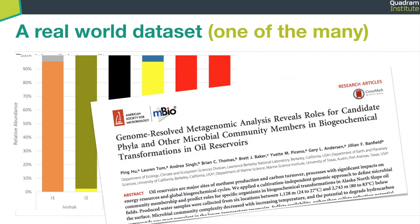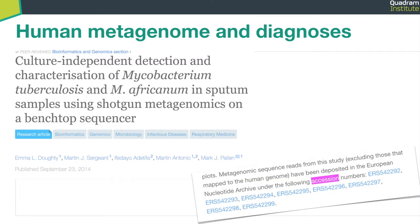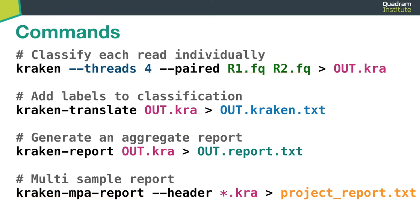All metagenomic papers come with accession numbers to public repositories, so we can download the raw data and replicate the analysis. This paper, for example, compared environmental metagenomes from different sites in oil fields in Alaska. Environmental samples are interesting because they are usually rich in novel species. The last dataset we are going to use now is a study from Mark's group, where they detected the presence of Mycobacterium tuberculosis in sputum samples.